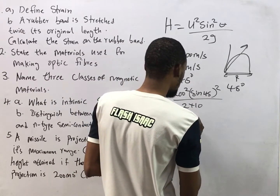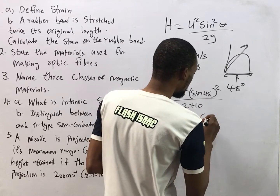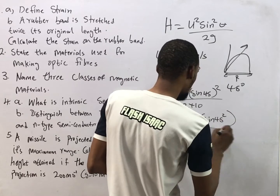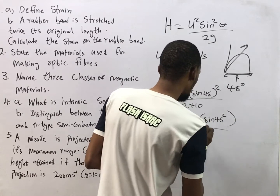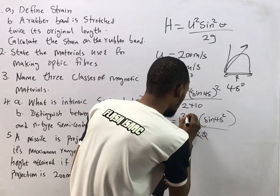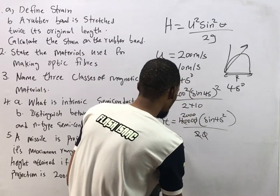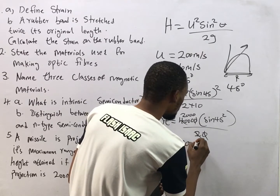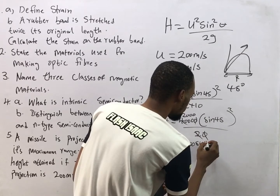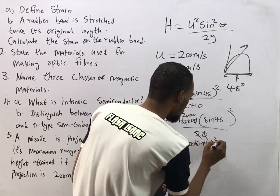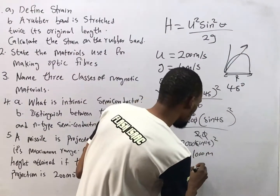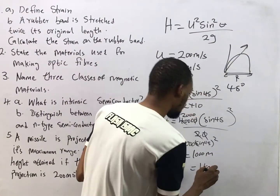200 squared is 40,000. Dividing by 20 gives 2,000. Then 2,000 × sin²45° = 1,000 meters, which equals one kilometer. So the maximum height attained is 1,000 meters (1 km).